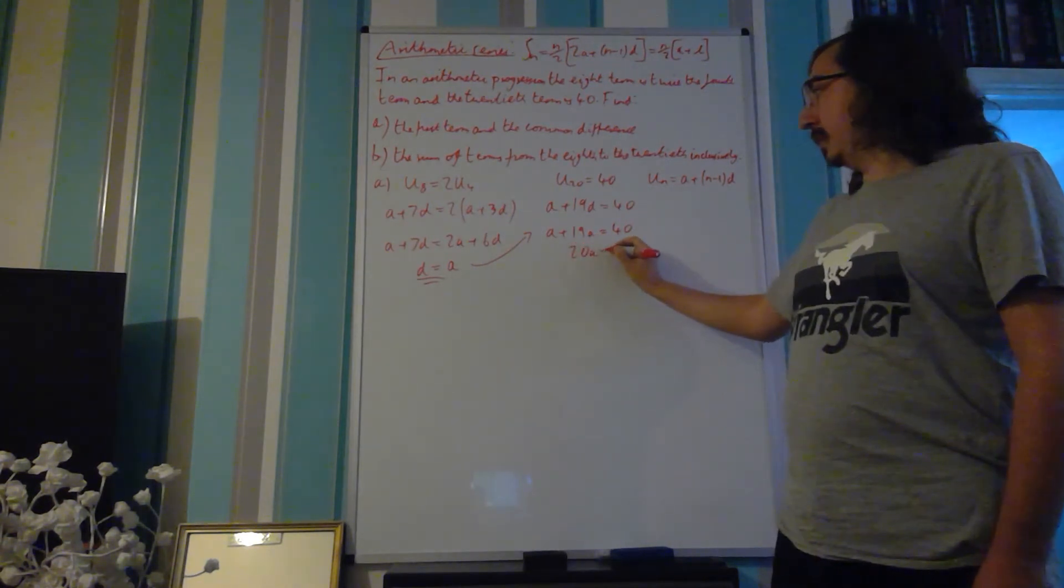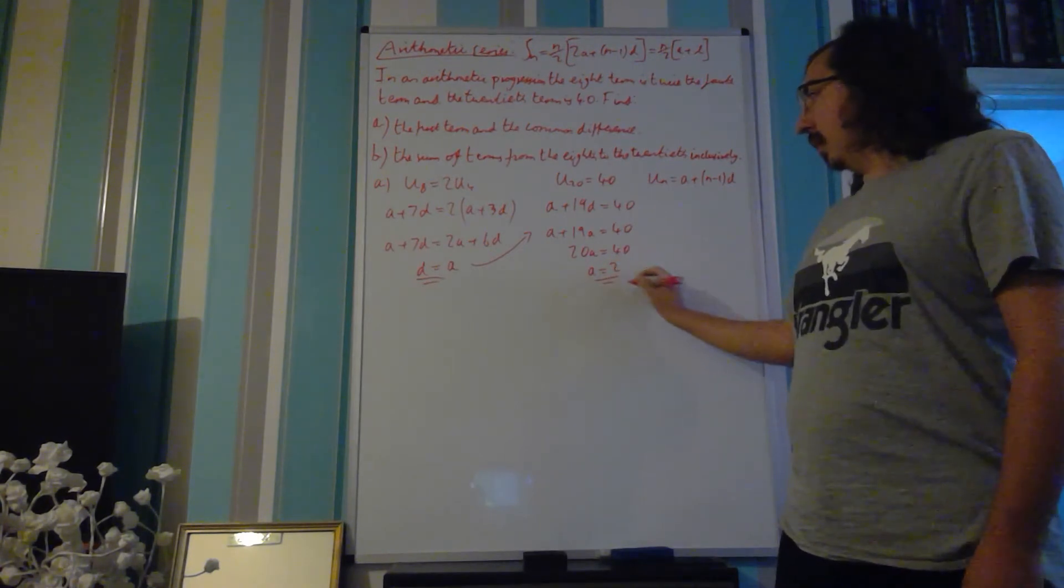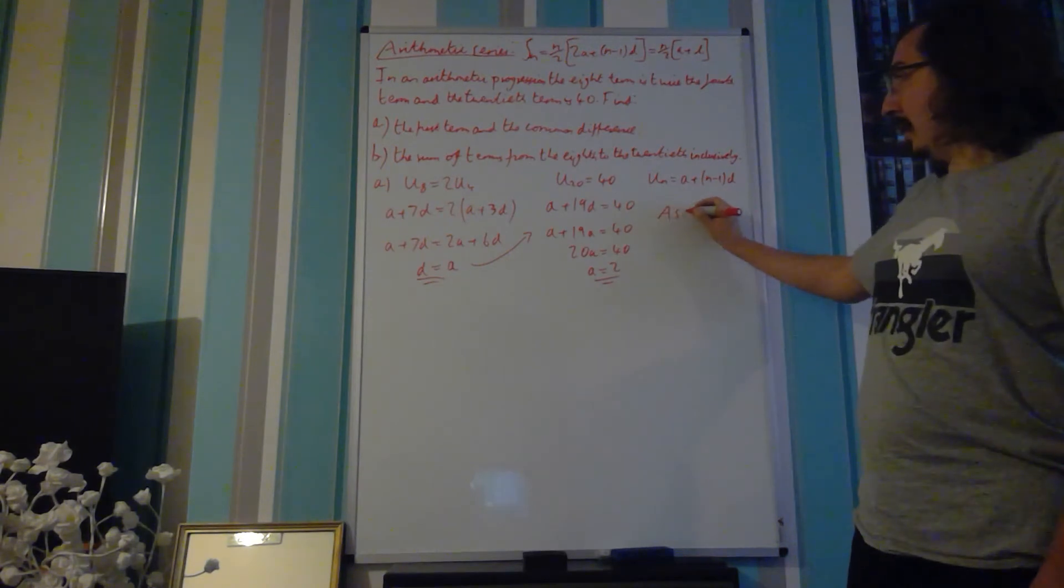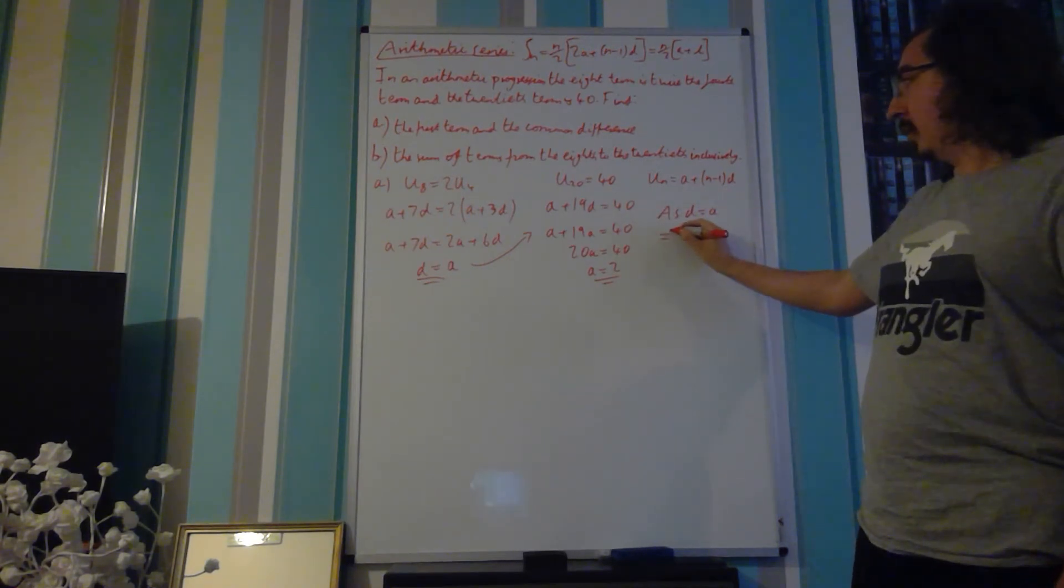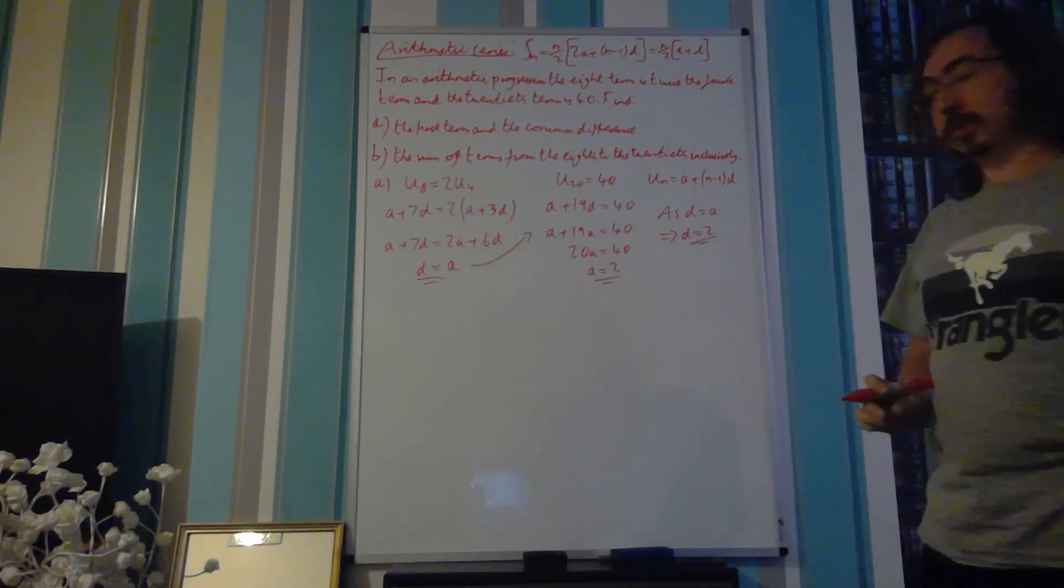So, therefore, 20A is equal to 40, and A is equal to 2. Now, as D is equal to A, that implies that D must also be equal to 2.